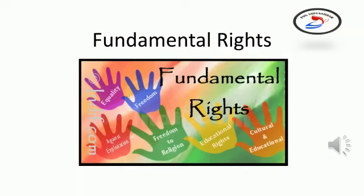The Right to Freedom of Religion provides religious freedom to all citizens — every person has the right to practice, profess and propagate the religion of their choice. Cultural and Educational Rights state that all minorities, religious or linguistic, can set up their own educational institutions to preserve and develop their own culture. The Right to Constitutional Remedies allows citizens to move the court if they believe that any of their fundamental rights have been violated by the state.